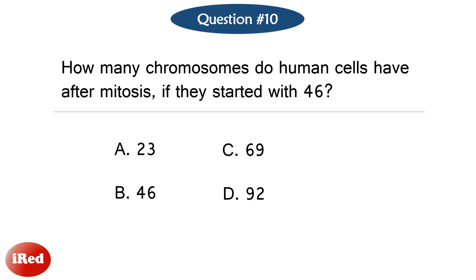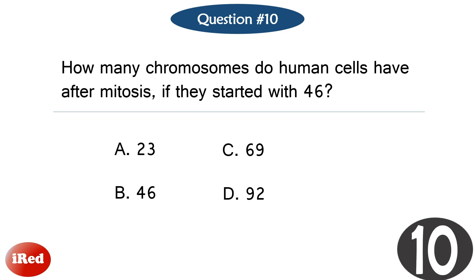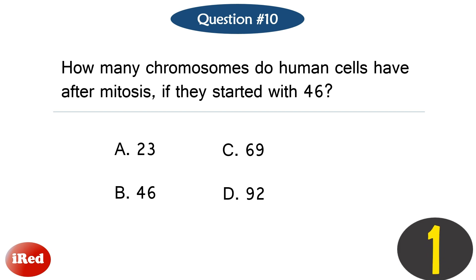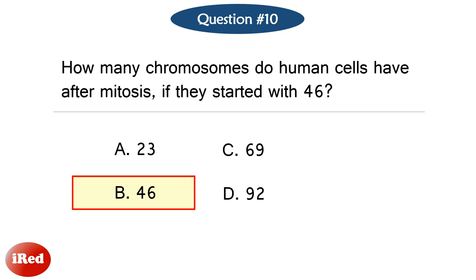Question number ten. How many chromosomes do human cells have after mitosis if they started with 46? The correct answer is letter B: 46.